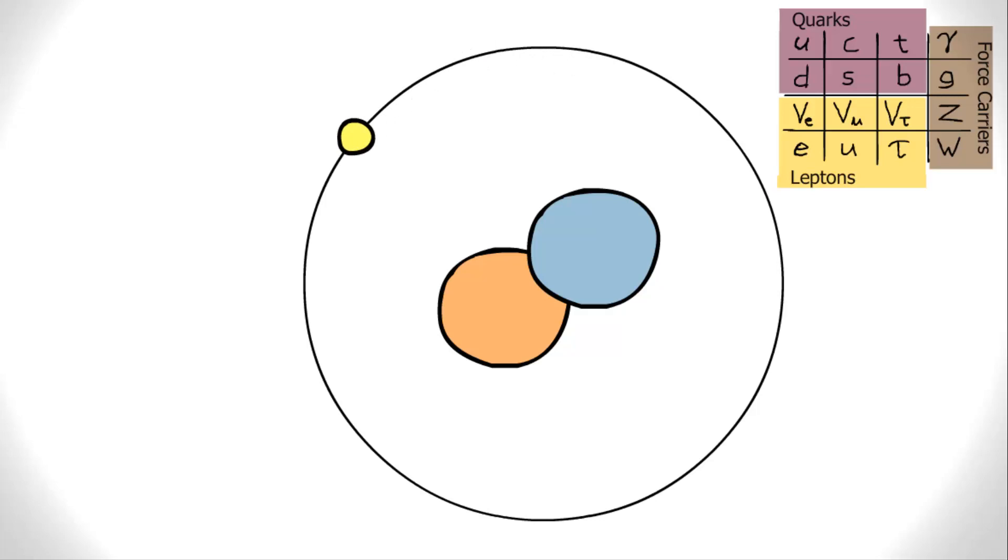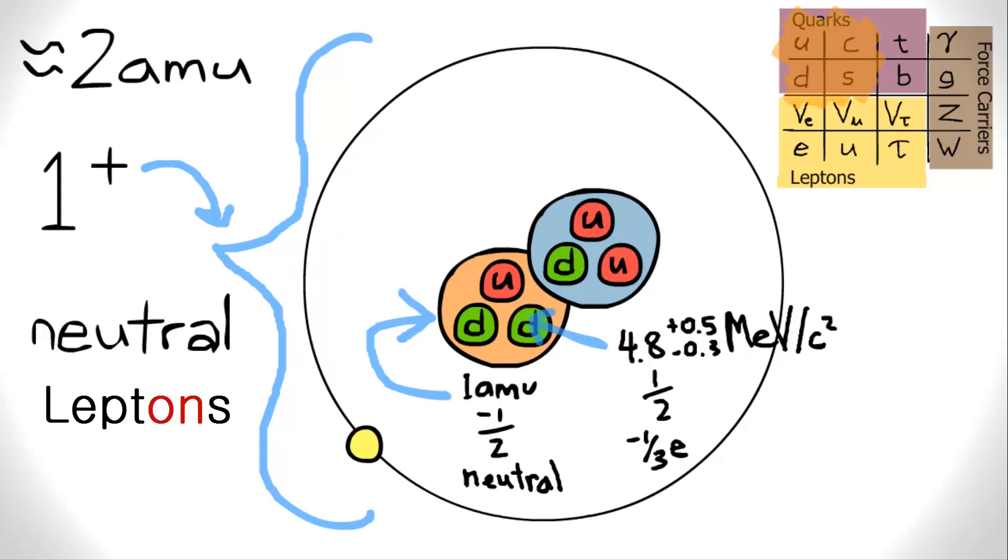Quarks are the fundamentals of most subatomic particles. For example, a proton is made up of two upquarks and one downquark. A neutron is made up of one upquark and two downquarks. These quarks have different mass, spin, and charge, which the atom inherits subsequently.